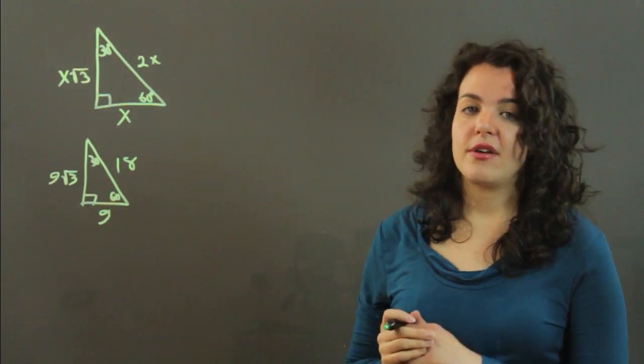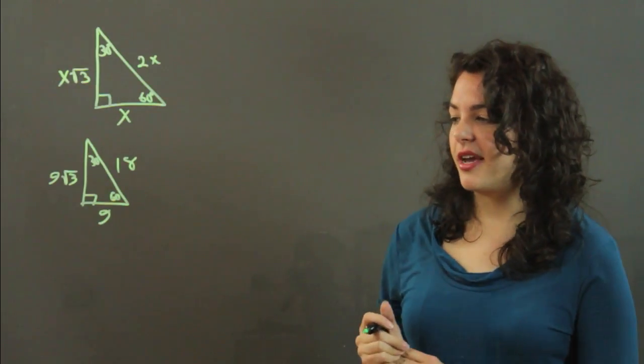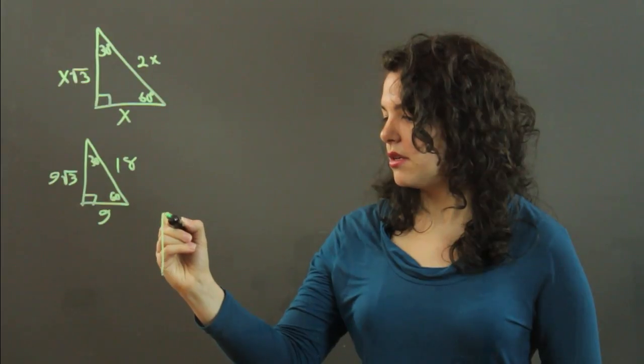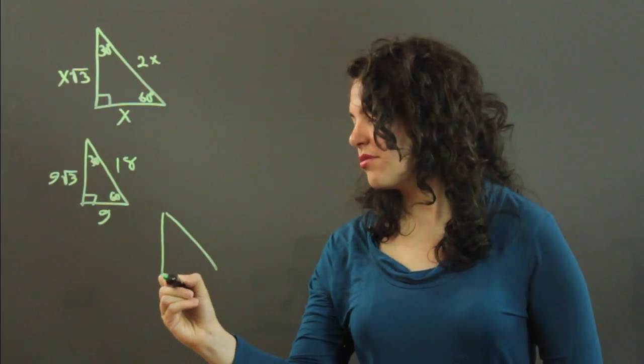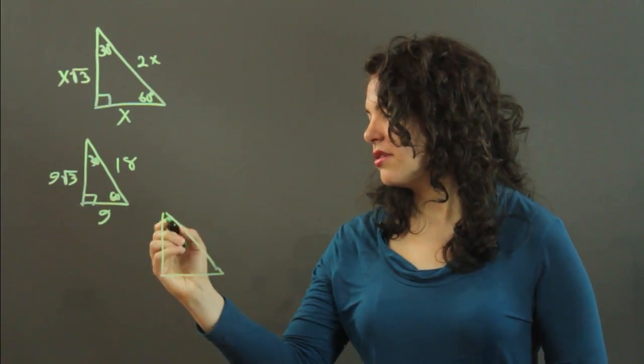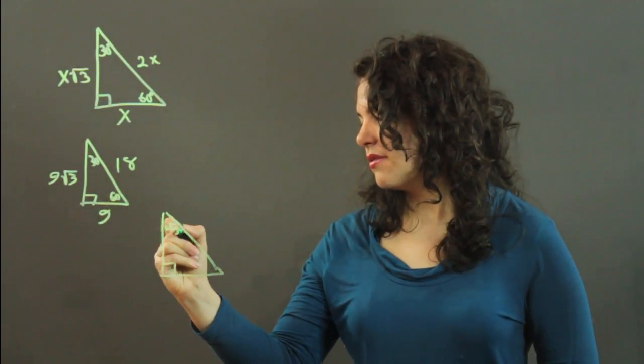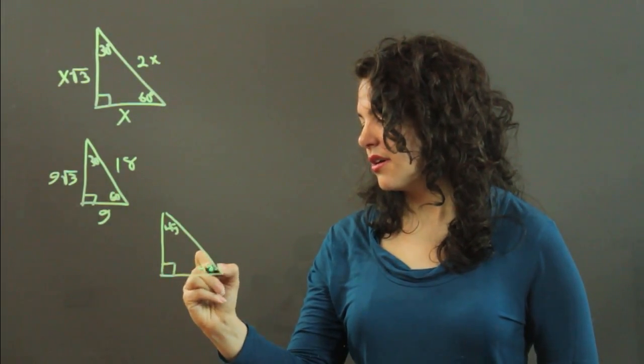And then we're going to look at one more triangle. We're going to take a look at the 45, 45, 90. Named so for the measure of its angles. We have 45, 45, and 90.